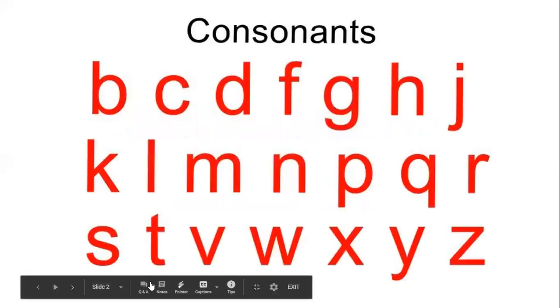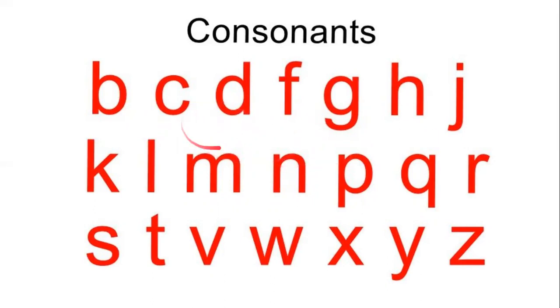So what are consonants children? We learned vowels right? So the letters except vowels are called consonants. Today we will learn the sounds of consonants. There are 21 consonants.